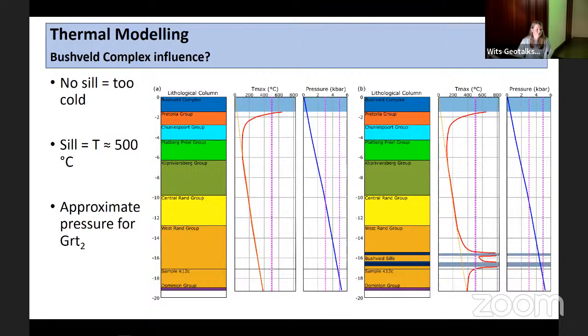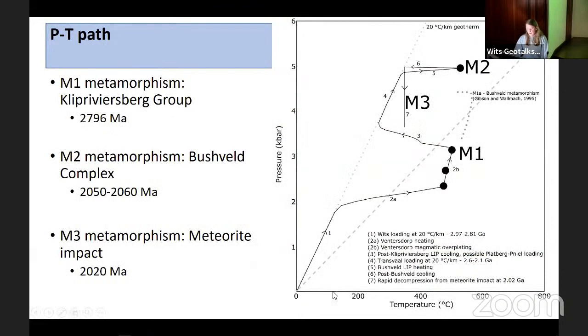I did some sill emplacement modeling. The eruption of the Klipriviersberg group has thermal influence on rocks directly beneath, but with no sill we're sitting at about 200 degrees and we need to get to 500. The emplacement of a sill within a couple hundred meters of our sample is enough to push us up to 500 degrees celsius. Having a Klipriviersberg age for metamorphism makes sense - we have a source to get our heat. But what about this overgrowth? The pressure is substantially higher.